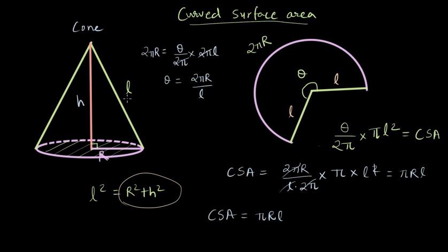So you just need to know the radius and the slanted height L. But what if you didn't know what L was and you were just given with H? We can know that L is basically the square root of R² + H² from here. And then you can also write this as π times R times square root of R² + H². So basically, even if you weren't given with the value L, you can still find out the curved surface area of the cone like this.